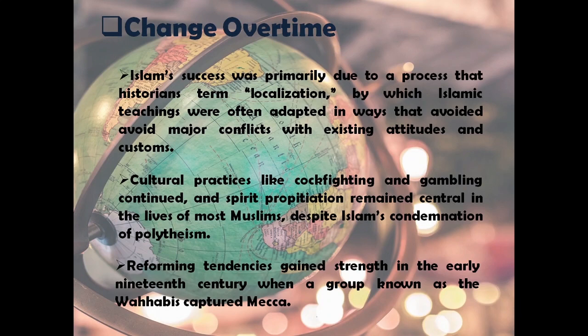Reforming tendencies gained strength in the early 19th century when a group known as the Wahhabis captured Mecca. The changes that Islam introduced were often most visible in people's ordinary lives — pork was forbidden to Muslims, a significant development in areas like eastern Indonesia and the southern Philippines where it had long been ritual food. A Muslim could often be recognized by a different dress style, like chest covering for women, and male circumcision became an important rite of passage.